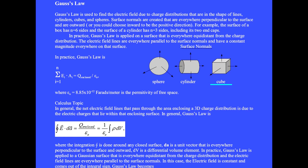This box has n equals six sides. The cylinder has n equals three sides, which is the round part and the two end caps. The sphere has a single surface. The sphere will enclose a point charge Q. The cylinder will enclose a line of charge, and the cube will enclose a sheet of charge.